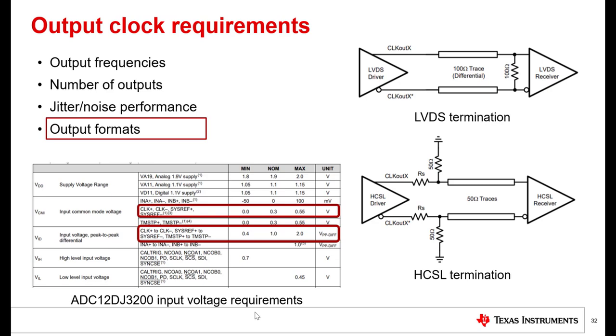The last factor to consider while determining the system's output requirements is the output format of each clock. The output format of the clocking device must be compatible with the input clock requirements of the receiver. One needs to consider the voltage swing, common mode voltage, output termination, and whether the clock is differential or single-ended. The table shows the input common mode voltage and input swing requirements of the ADC12-DJ3200 datasheet. To clock this, we must find a clocking device that has an output that is compatible with this input. Different clock drivers also require specific terminations at the clocking device output and the receiver input to generate a voltage swing or common mode voltages. Here are examples of LVDS and HCSL format terminations. Using a clock generator that can be programmed to generate different output formats reduces design complexity when clocking multiple receivers with different input clock requirements.